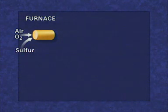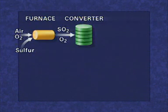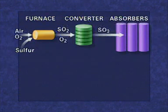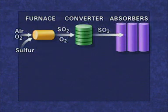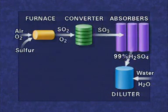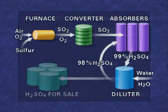Sulfuric acid is formed by burning sulphur in a furnace to form sulphur dioxide. In a converter, the sulphur dioxide reacts with more air to form sulphur trioxide. In absorbers, the sulphur trioxide mixes with fairly concentrated sulphuric acid to increase the concentration of the acid. The acid is then diluted to the concentration needed by the customer. Some acid is recycled through the absorbers; some is stored for sale.